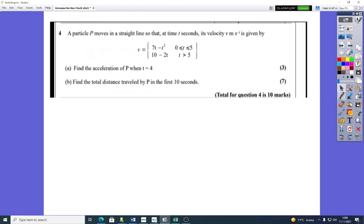Okay, so let's have a look at this scenario. A particle moves in a straight line so that at time t seconds, its velocity is given by those two different scenarios. So that's what's happening to it between 0 and 5 seconds, and that's how it changes when t is greater than 5.